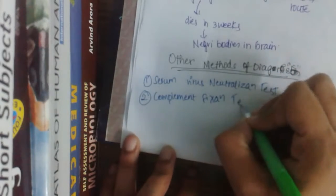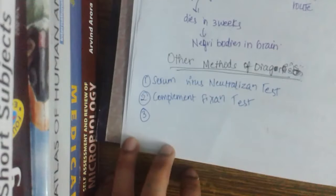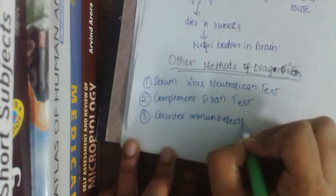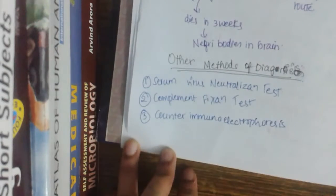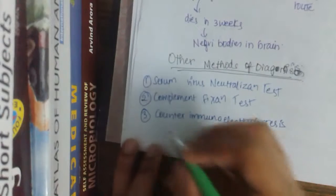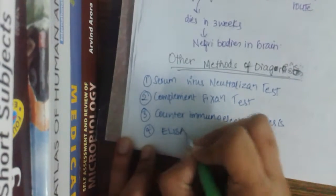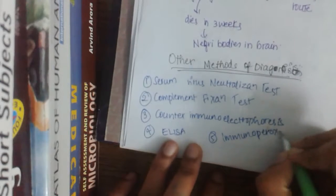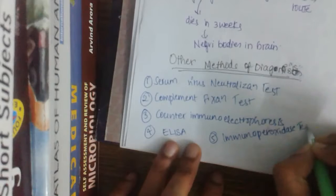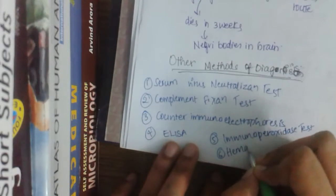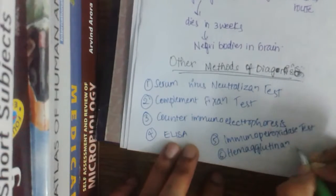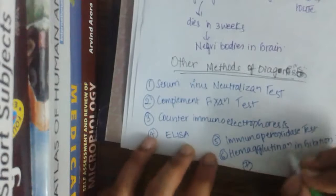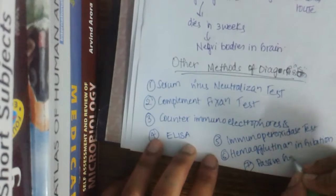The second additional method is the complement fixation test, used for detection of rabies antigens and antibodies. The third is counter immuno-electrophoresis test for assessment of antibodies in the serum. Fourth is ELISA for assessment of antibodies. Fifth is the immunoperoxidase test for detection of antigen. Sixth is the hemagglutinin inhibition test. These tests will be discussed in the immunity chapters. The final test is the passive hemagglutinin assay.